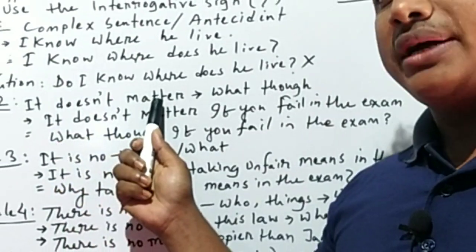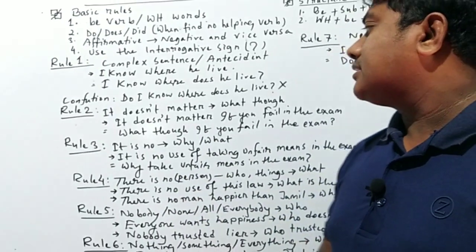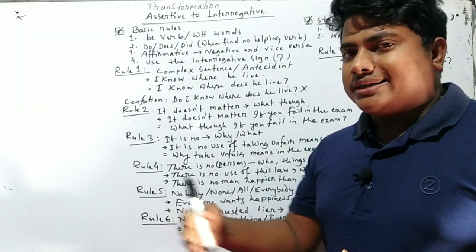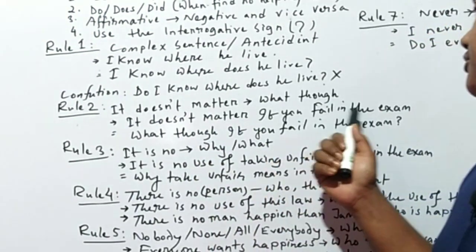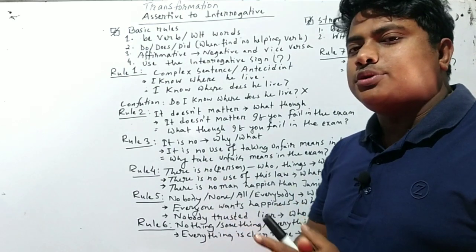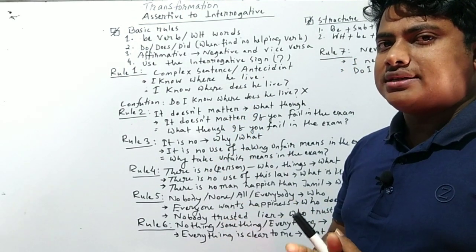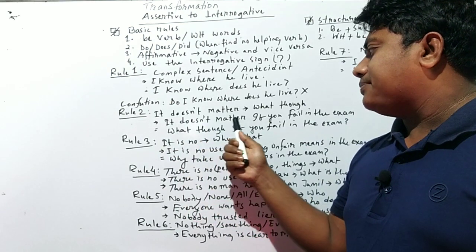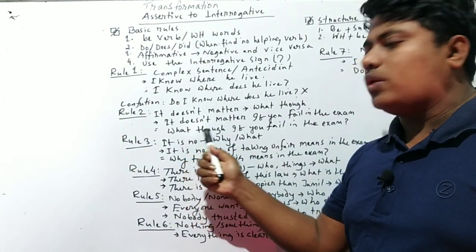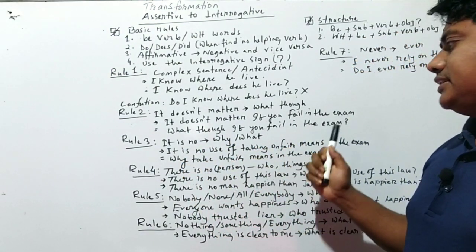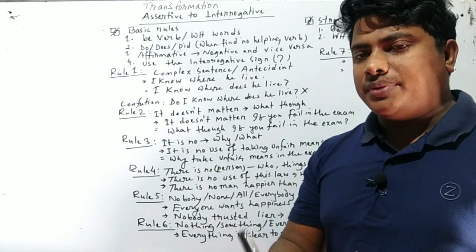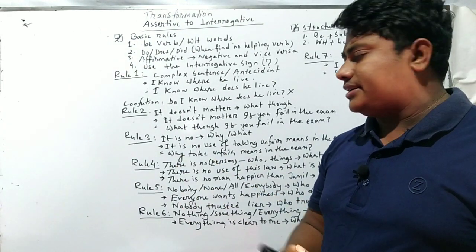Rule two is a very important rule. Example: 'It doesn't matter if you fail in the exam.' This is an assertive sentence. When converting to interrogative, the phrase 'it doesn't matter' must be omitted and replaced with the word 'though.' The result is: 'Though if you fail in the exam' — this is the interrogative form.